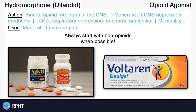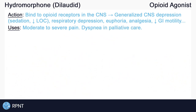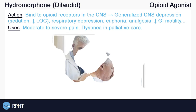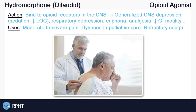One of the effects of opioids is respiratory depression, which slows the respiration rate. Some clients, especially those with end-stage heart failure or those in palliative care, may experience the feeling of breathlessness or dyspnea, and their respiration rate may increase. Hydromorphone is often given in palliative care to alleviate those symptoms of dyspnea by regulating their breathing. Hydromorphone is also known to suppress cough due to its ability to affect the medulla, where the cough center is also found.